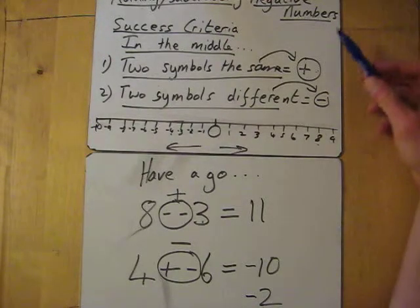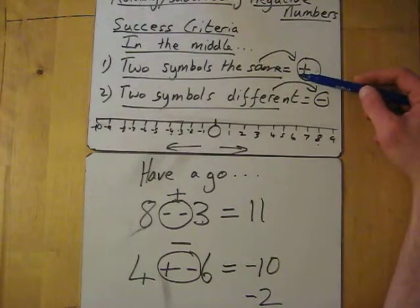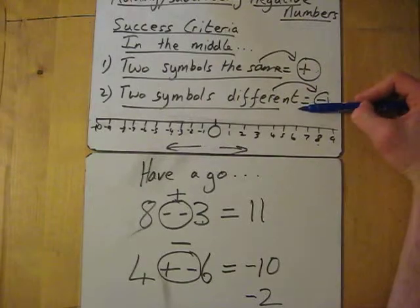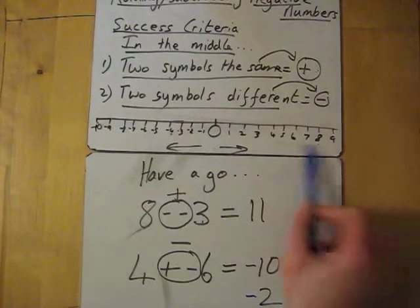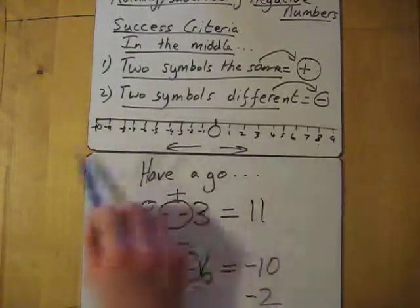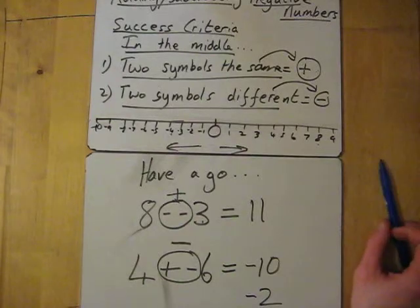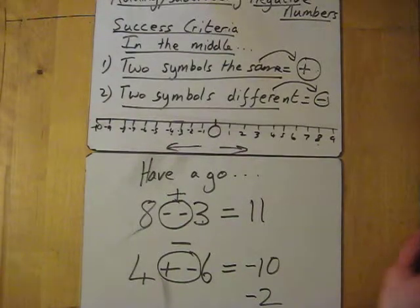So there are the rules: two symbols are the same in the middle, then you add; two symbols are different, then you subtract. And even if you need to draw this number line, it'll help you out in the exams.